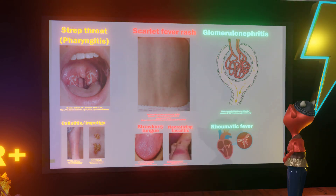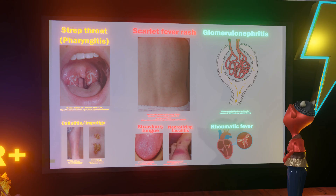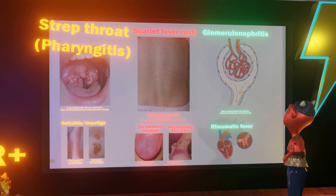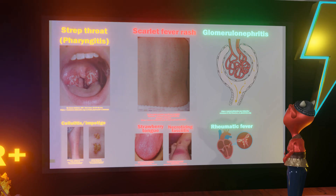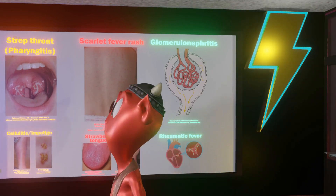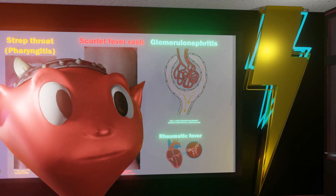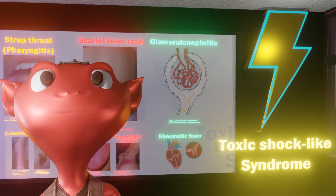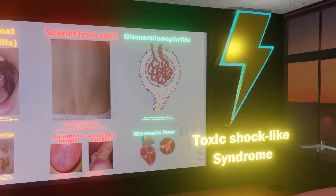We also have post-streptococcal glomerulonephritis, as well as rheumatic fever. Rheumatic fever, which we'll discuss in a separate video, involves the Jones criteria, with the 'O' being for heart disease — rheumatic heart disease — often involving the mitral valve, which is why that's highlighted. Rheumatic fever usually follows strep throat, not strep skin infections — just a thing to keep in mind. There's also a lightning bolt on the wall to remind us of toxic shock-like syndrome, caused by the pyrogenic exotoxin of strep pyogenes.